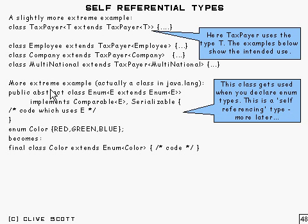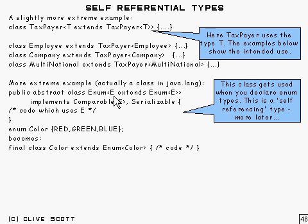A slightly more extreme example occurs in java.lang itself. And there you'll see something called Enum, with a capital E. It's an abstract class, which is declared as being an Enum, and that's a Comparable<E>, which is not too hard to consider, and Serializable.